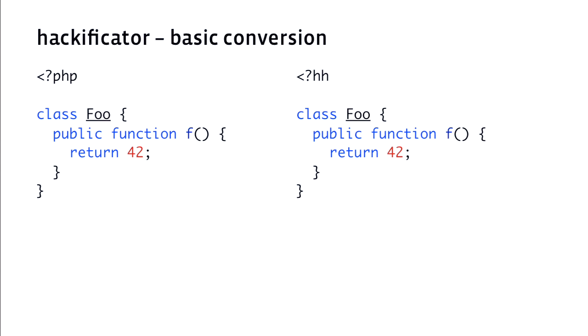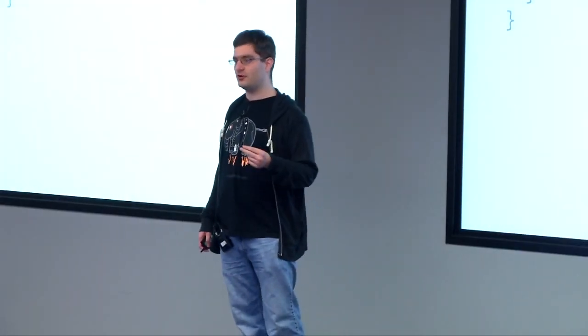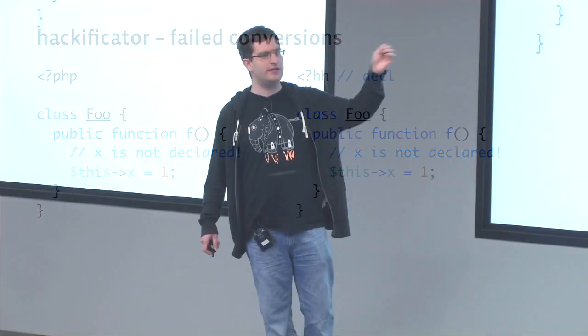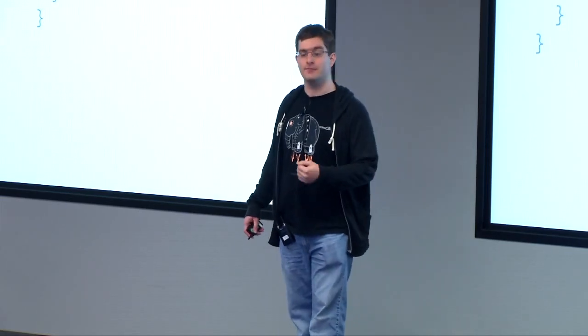Just as a refresher: strict mode requires everything be annotated and there's no interoperability with PHP. Partial mode allows interoperability with PHP and doesn't require annotations everywhere — that's probably where most of your code is going to end up. And decl mode doesn't type check the bodies; it just checks the interfaces. Here's an example of a file that doesn't convert cleanly into partial mode: Hack requires that all member variables be declared and defined, but PHP doesn't. So although this is legal PHP, it's not legal Hack partial, and we'll leave it in decl mode where we skip type checking the body.